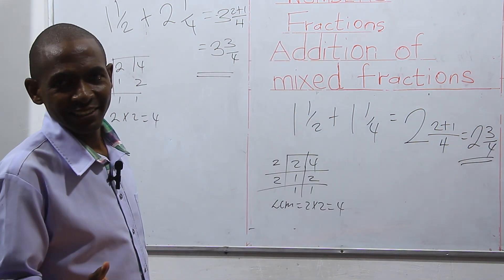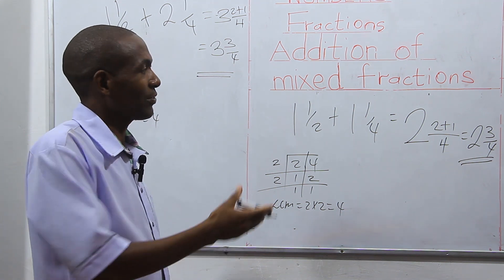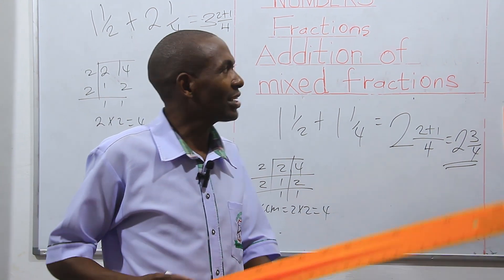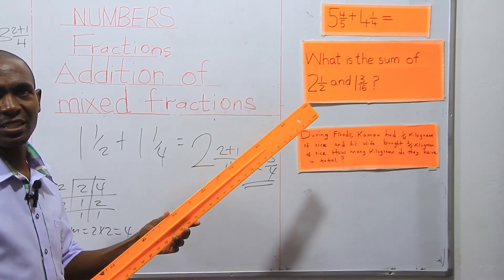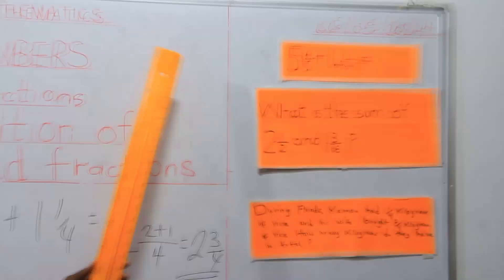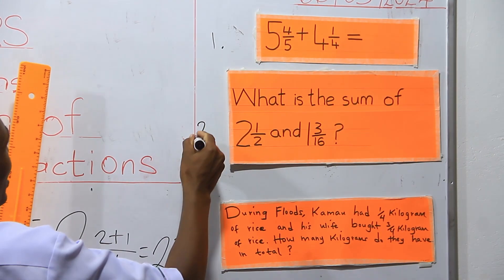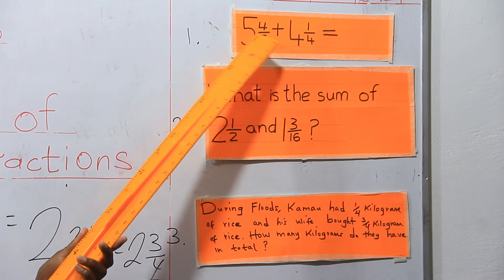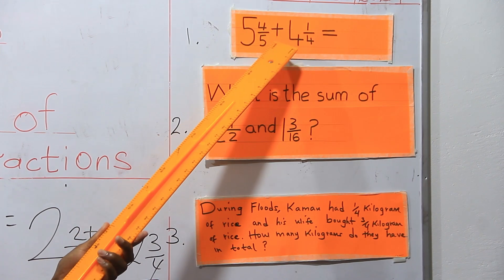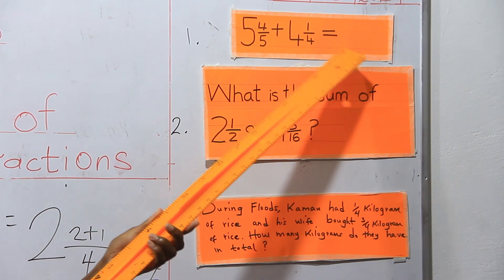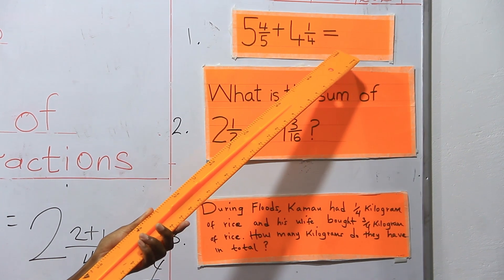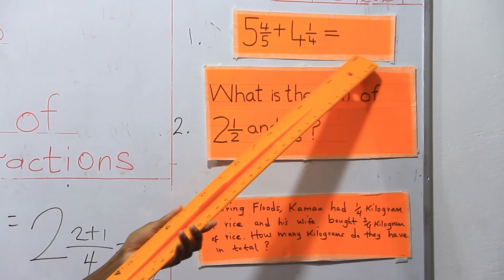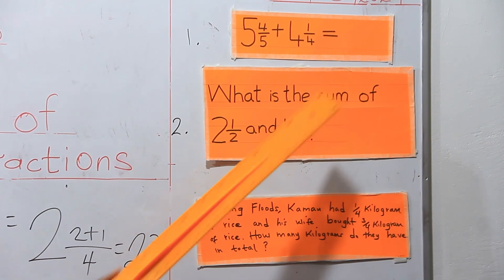Congratulations if you were able to get two and three-quarters. I have some questions here as your extended activities. The first question you are supposed to try is five and four-fifths plus four and a quarter. Write that in your exercise books.